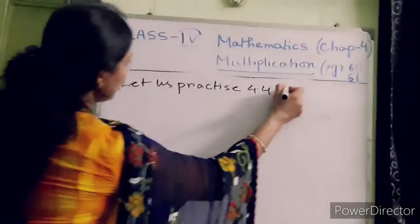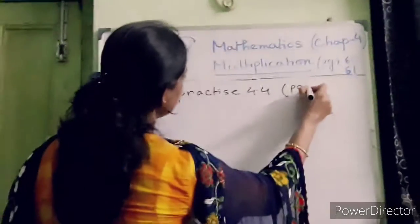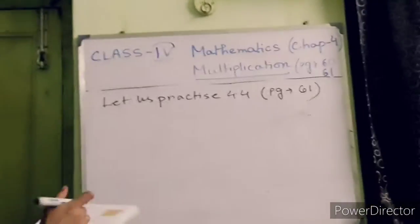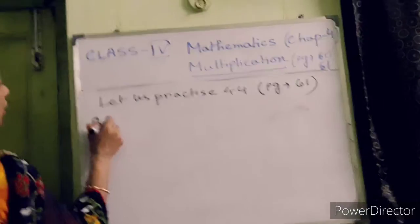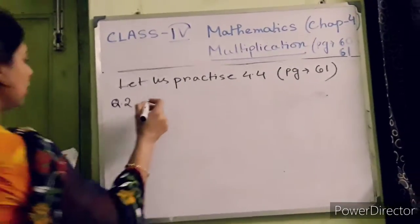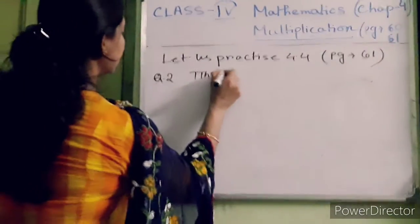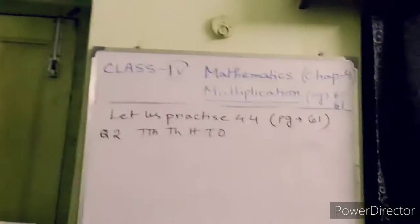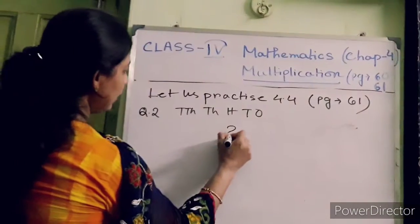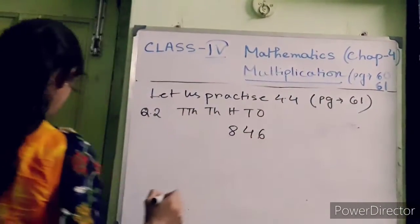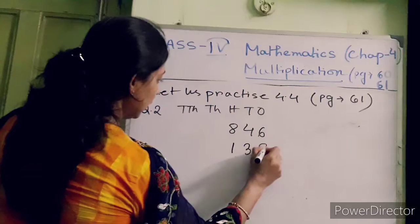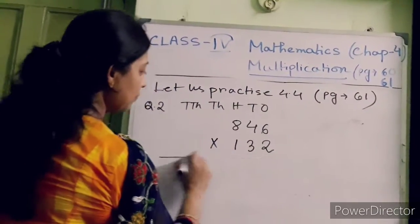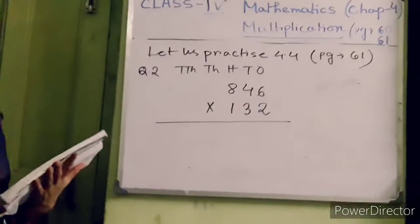Question number 2, I am going to solve here. Setting up the place value table: 10,000, thousands, hundreds, tens, and ones. The number is 846. Multiply with 132. Same process — just follow the same rule.